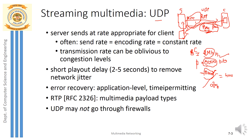A major drawback of UDP streaming is that a separate server must be maintained for interactivity, and if that server crashes, there is no interaction between client and server. Another drawback is varying bandwidth between server and client, which causes the sending and consumption rates to vary, resulting in glitches and video freezing at the client side.